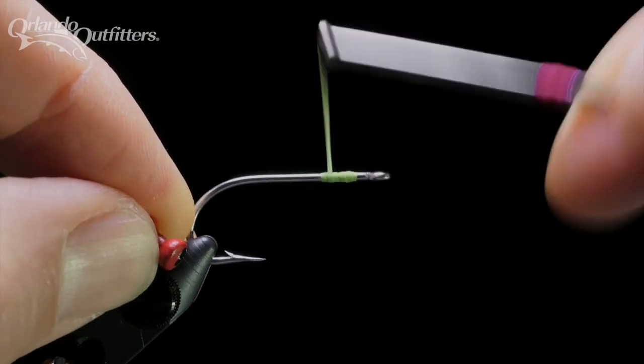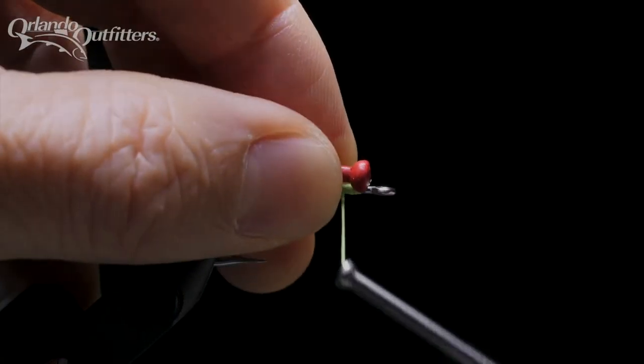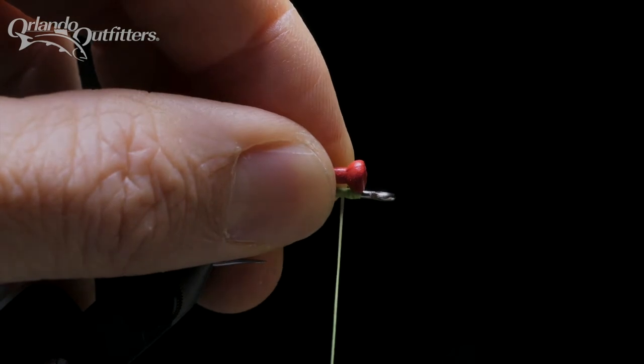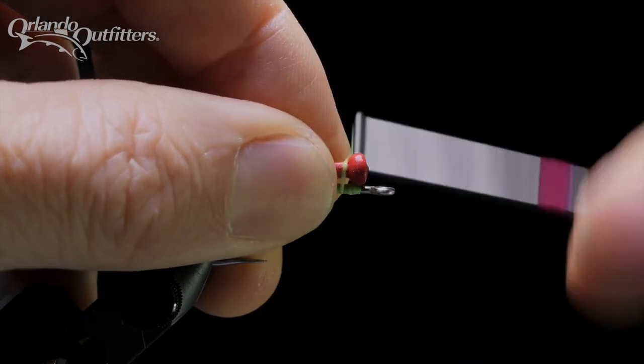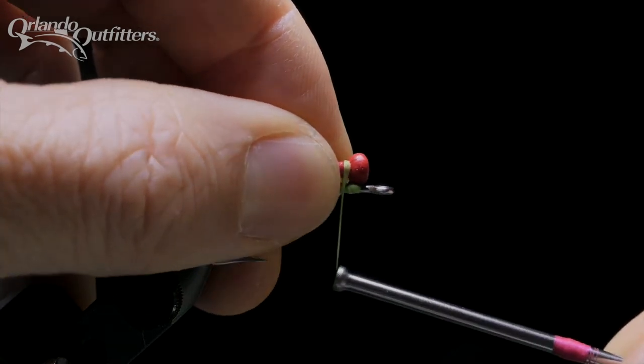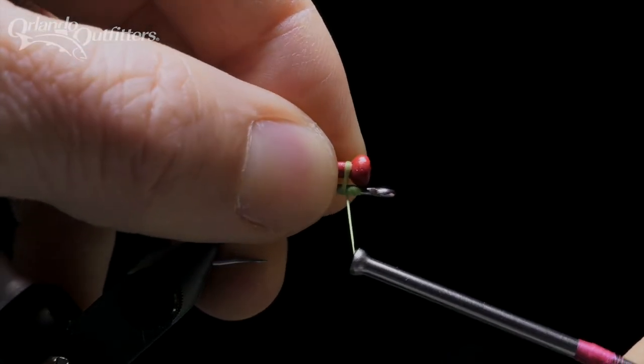Start by laying down a thread base for the eyes to sit on. Then place the eyes on top of the hook, parallel to the hook shank, centered over the hanging thread. Place two loose wraps over the center of the eyes and around the hook shank, finishing with the bobbin underneath the hook.